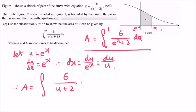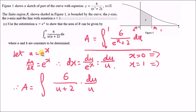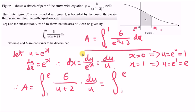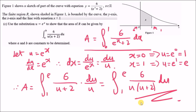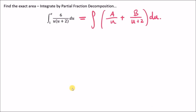Simplifying: the area equals the integral from 1 to e of 6 over [u(u plus 2)] du. This proves the required form.